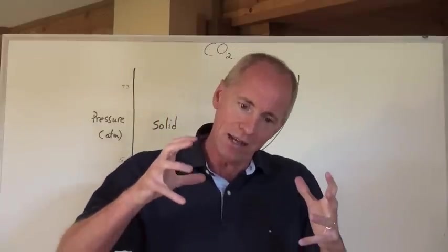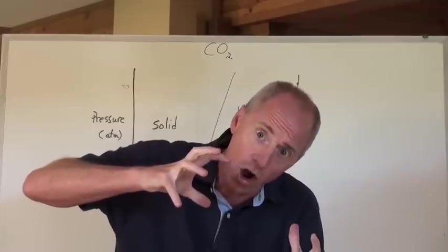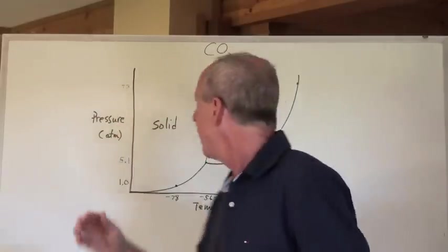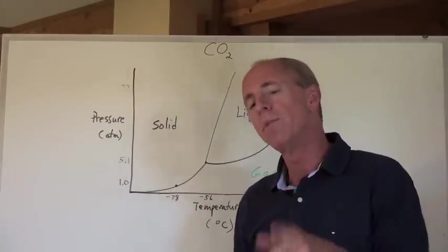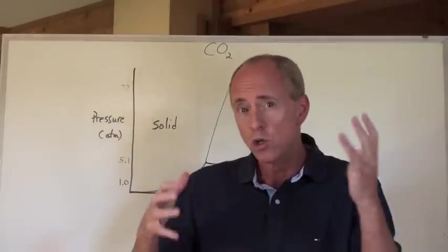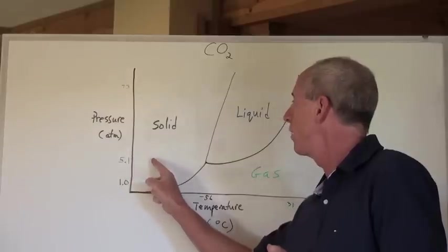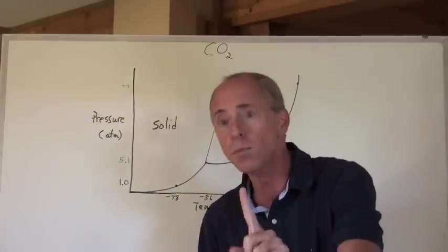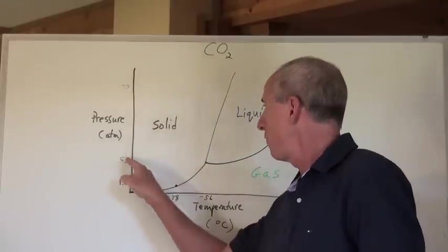How could you keep CO₂ as a solid longer as it warms up? You'd have to apply pressure to prevent it from entering the vapor phase. So if we increase the pressure — let's say up to about 5.1 atmospheres, five times normal atmospheric pressure — and squeeze down on the CO₂ sample while warming it from minus 100 degrees Celsius, it reaches minus 78 but stays a solid. Even at its normal sublimation point, it won't sublimate because it's under 5.1 atmospheres of pressure.